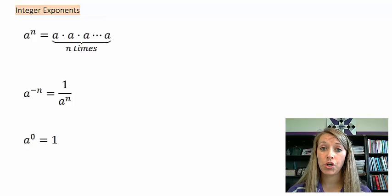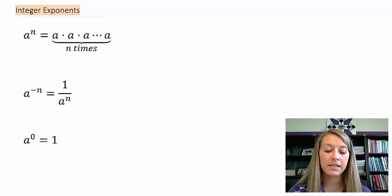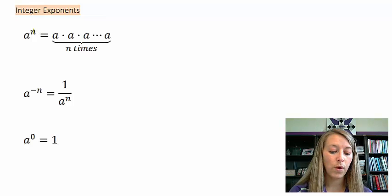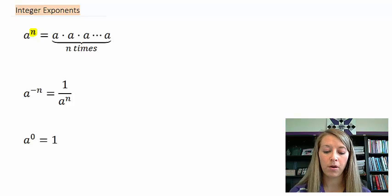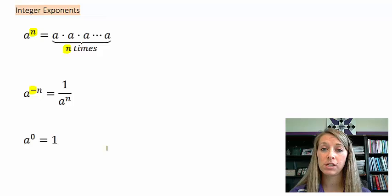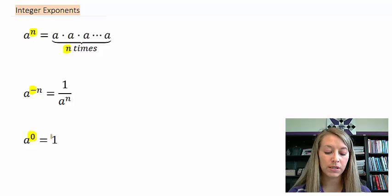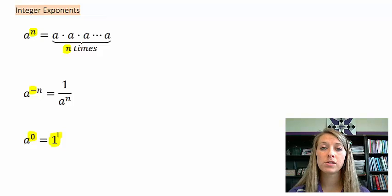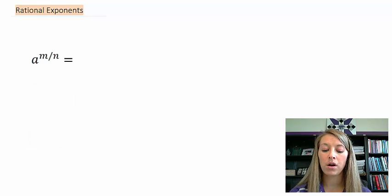What was done before is integer exponents, where all exponents have been whole numbers. We know that anything such as a to the nth power is a times itself n times. When our exponent is a whole number that makes sense. If our exponent is negative, we take the reciprocal of the fraction. If our exponent is zero, that simplifies to be one. But how do we deal with it when they are rational?